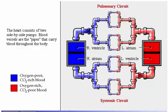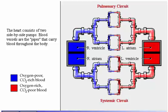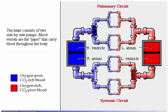The heart consists of two side-by-side pumps. The blood vessels are the pipes that carry blood throughout the body. In this animation, we see that the right atrium and right ventricle pump oxygen-poor, carbon-dioxide-rich blood to the lungs.